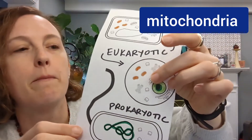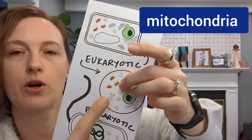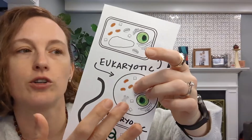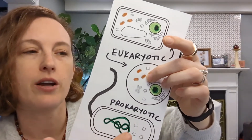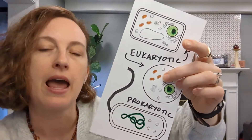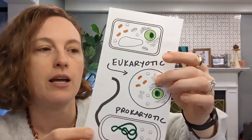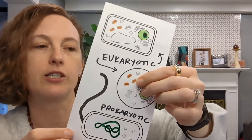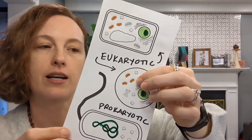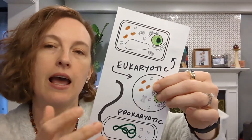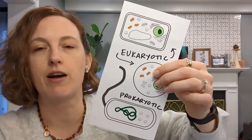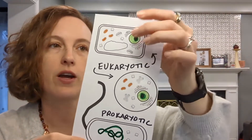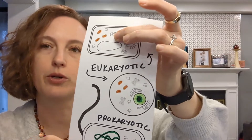Mitochondria are actually something that was a prokaryotic cell. The theory is that when the very earliest eukaryotic cells evolved, these prokaryotic cells got inside of them and they developed a symbiotic relationship. So mitochondria are actually ancient bacteria that live inside every one of our cells. They help eukaryotic cells by making energy, and the eukaryotic cell helps the mitochondria by providing a source of food and a home. All eukaryotic cells have mitochondria that produce energy.